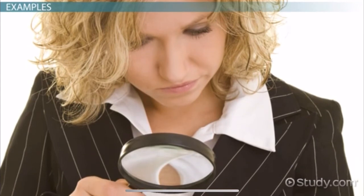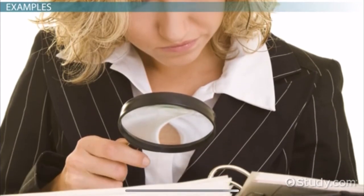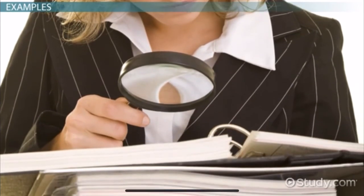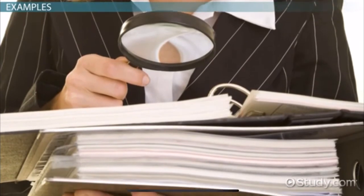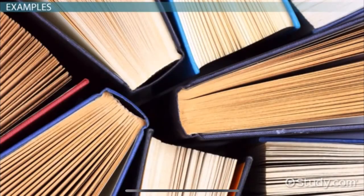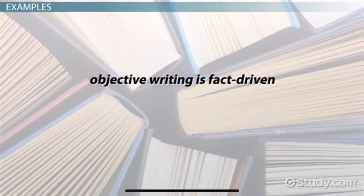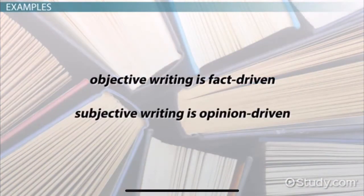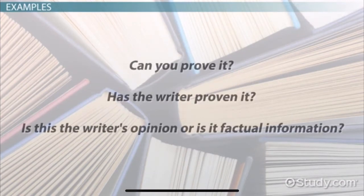Because it's important to understand the difference, and because some writers often use both subjective and objective writing styles, you should be able to distinguish which type of writing is which. To make it easy, let's simplify it: objective writing is fact-driven, and subjective writing is opinion-driven. For objective writing, you should be wondering: can you prove it? Has the writer proven it? Is this the writer's opinion, or is it factual information?